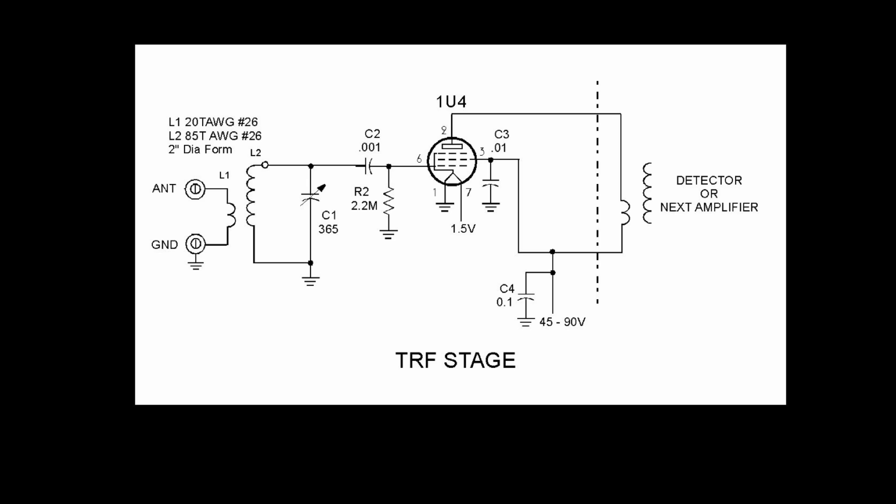Also, notice C2 and R2, both of those components are a grid leak system that sets the bias and allows the 1U4 to run in class A. We still have to run in class A mode.